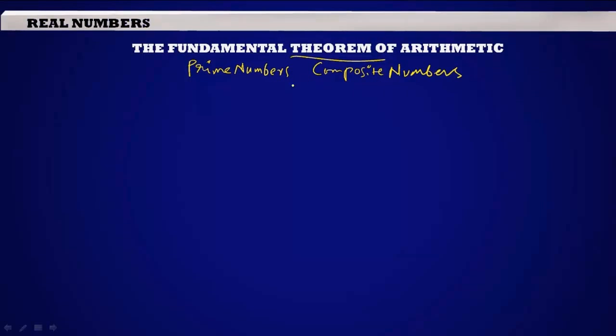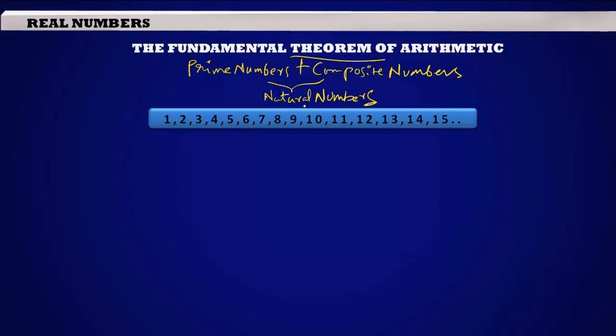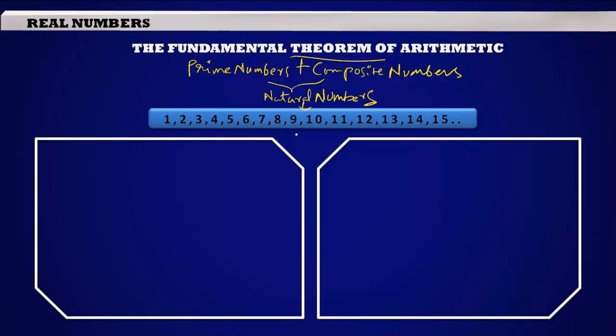The combination of prime numbers and composite numbers makes the natural numbers. Here we have the set of natural numbers beginning with 1, 2, 3, 4, 5... If somebody asked me to divide these numbers into two groups based on some difference, then I divided them like this: 2, 3, 5, 7, 11, 13 on one side and 4, 6, 8, 9, 10, 12, 14, 15 on the other side.